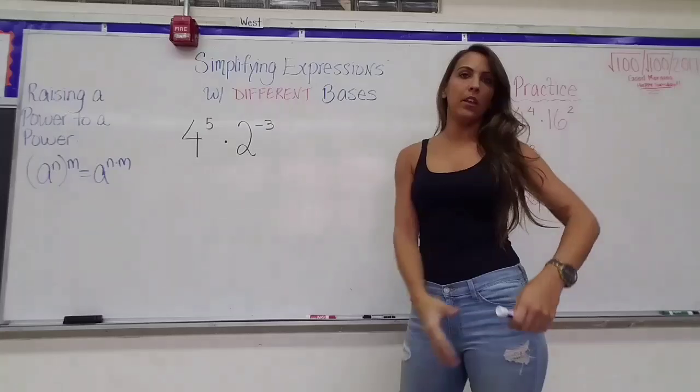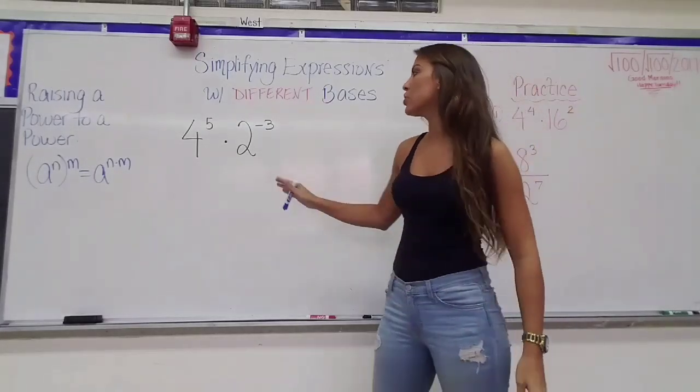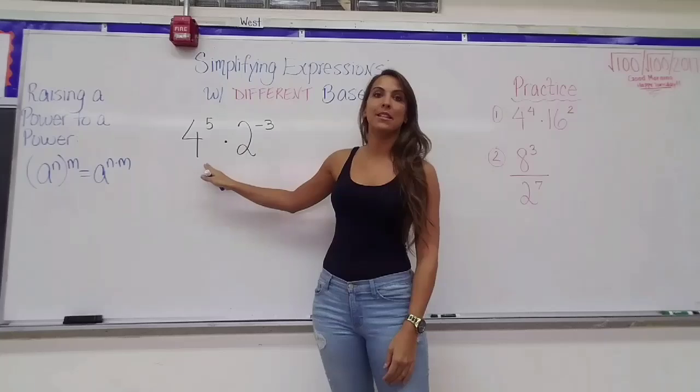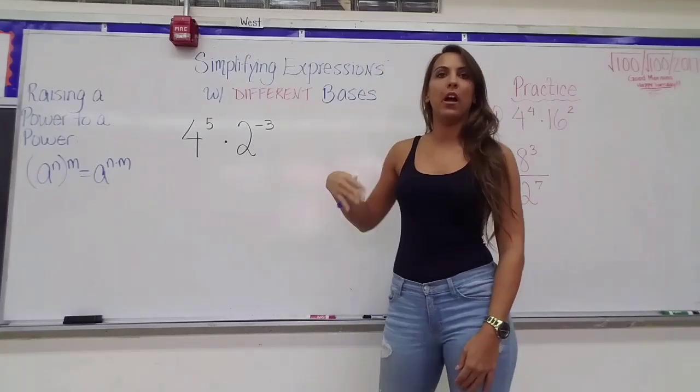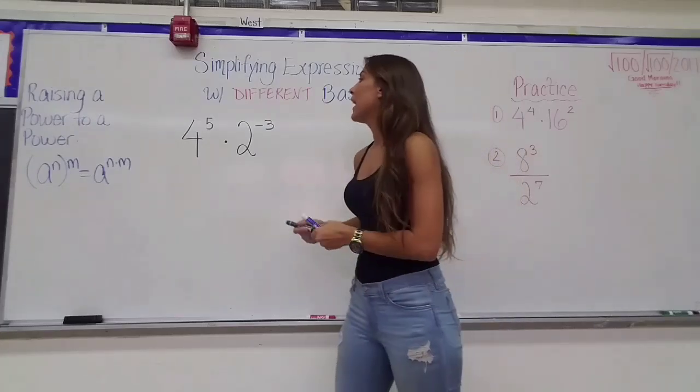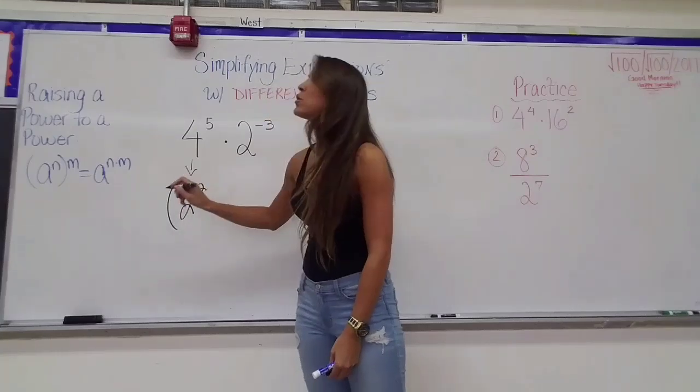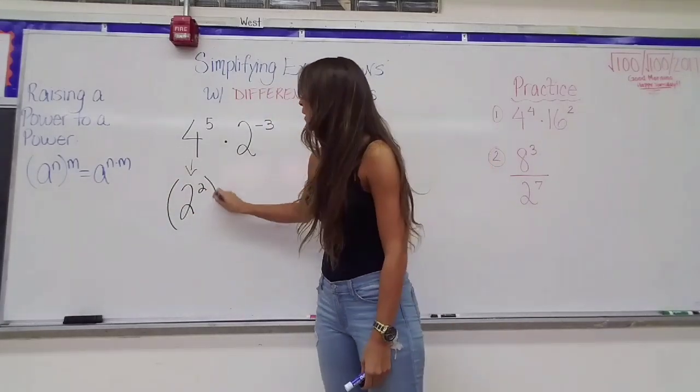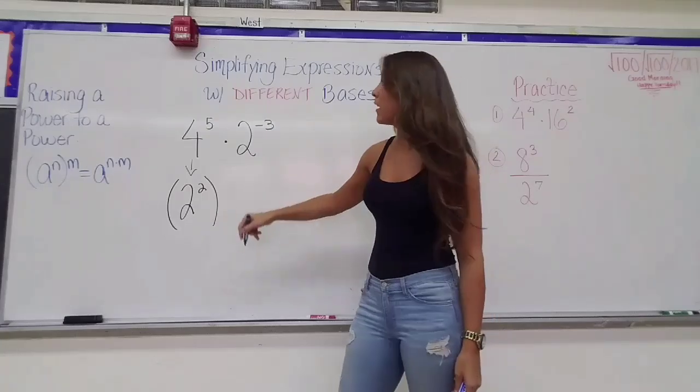So one thing that you can try to do when you're given an expression like this is you can see if you can change one of these bases into the other one. So if one of these bases is a power of the other one, we can rewrite it. So I know that 4 is a power of 2. 4 is the same thing as 2 squared. So I'm going to replace the number 4 with 2 squared. I'm going to write it as 2 squared instead.